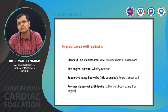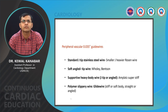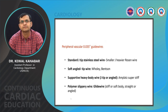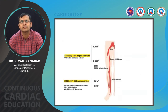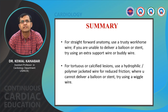Peripheral vascular is not the focus of this lecture, but briefly: for peripheral vascular you use 0.035 guide wires — standard routine wires, glide wire, or extra stiff glide wires.